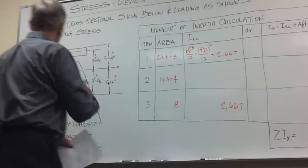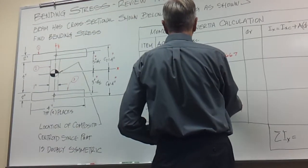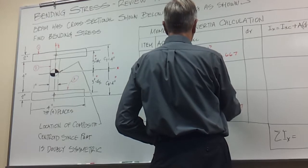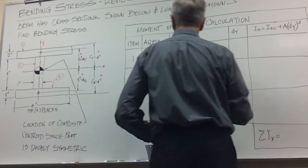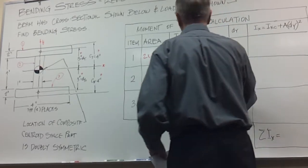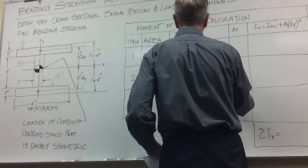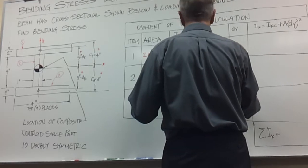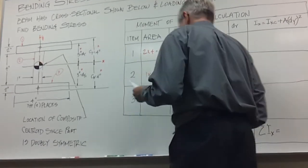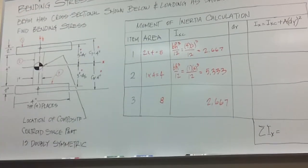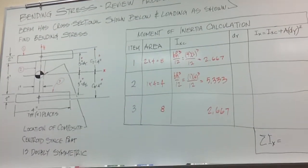Let's look at the middle piece, BH cubed over 12. That's still a good formula, isn't it? What's the base on this one? It's 1. The height? 4. 4 cubed. If we do that, that comes out to be 5.333.